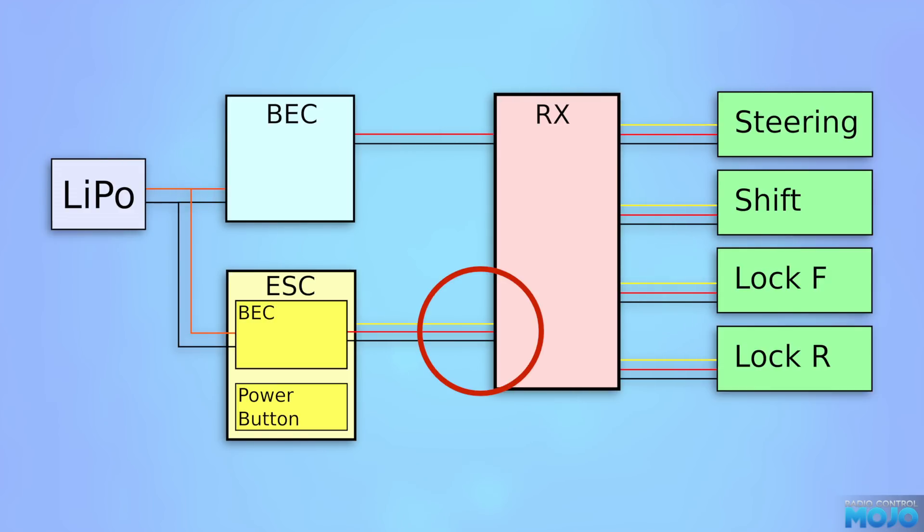Fear not though, all we need to do is pop the red wire from the servo connector on the ESC's connection to the receiver, and then it's isolated. And there we have the basic, quick and simple BEC install. This is what 90% of trucks run. It works, and it doesn't take that much fiddling around to make it go.